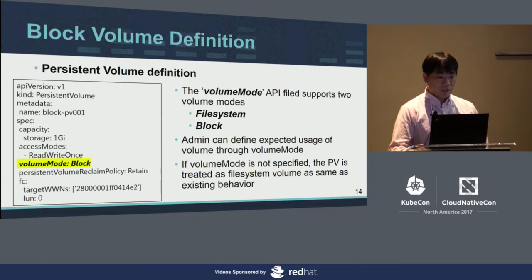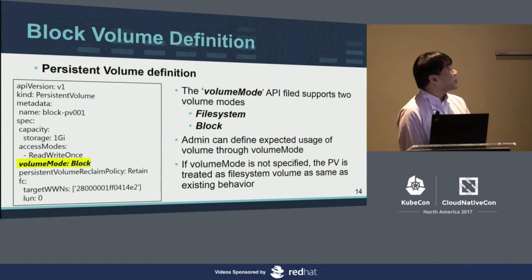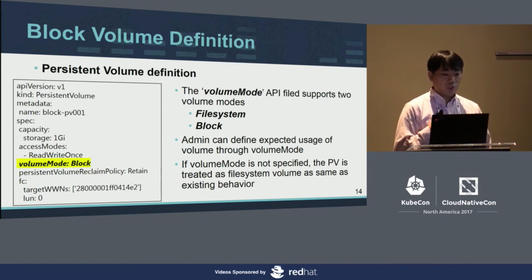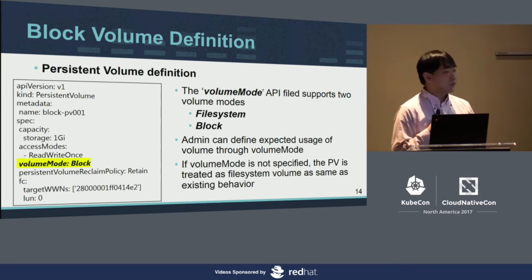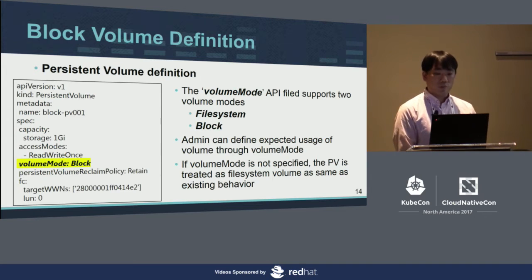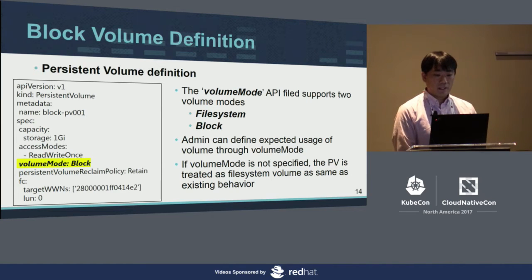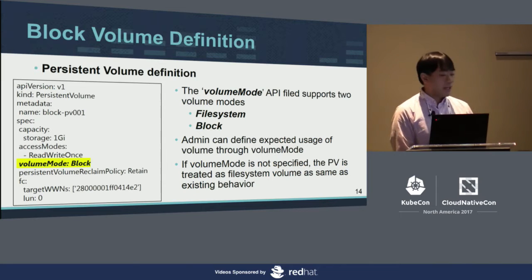Let me show more detail on the persistent volume definition. This figure shows a persistent volume definition with `volumeMode: Block`. Admin can define `volumeMode` in the PV definition. The `volumeMode` field supports two values: `Filesystem` and `Block`. Admin can define the expected usage of the volume through this parameter. If `volumeMode` is not specified, the PV is treated as a file system volume — the same as current existing behavior.